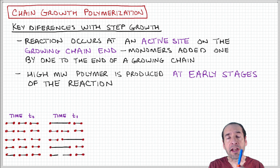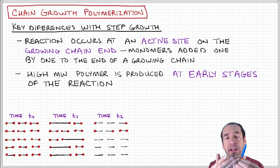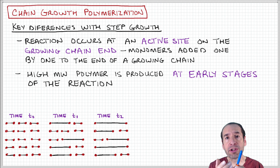Or between short fragments and monomers. So in the early stages, you build up small or low molecular weight fragments with low degrees of polymerization.